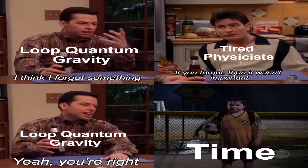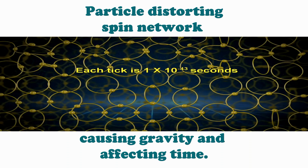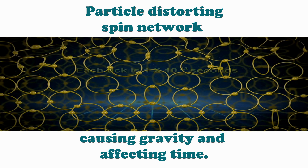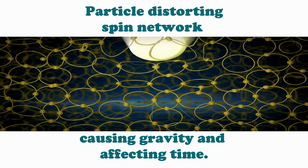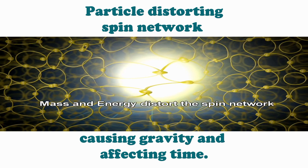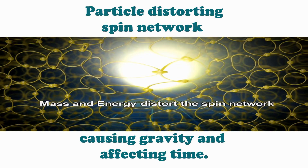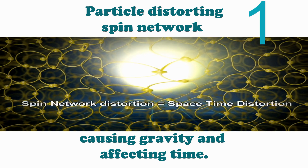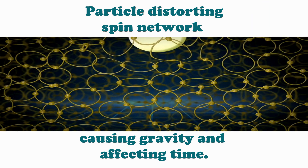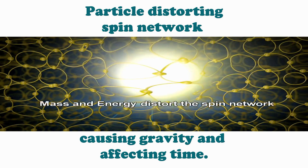But where did time go? In LQG, time doesn't exist as a separate fourth dimension. Rather, time is described by the movement of the spin network. When there is a particle that distorts it, it creates the illusion of time. Time can be represented as a digital clock which ticks by 10 to the power of minus 43 seconds every time the spin network moves, due to mass or energy.